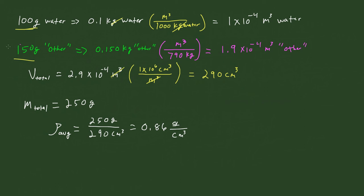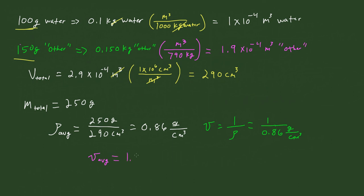Now we have the average density of this mixture, so we can easily calculate the specific volume, knowing that specific volume equals the inverse of the density. Therefore this is going to be equal to 1 divided by 0.86 grams per cubic centimeter. The dimensions flip — it goes from grams per cubic centimeter to cubic centimeters per gram — and so the average specific volume is going to be 1.16 cubic centimeters per gram.